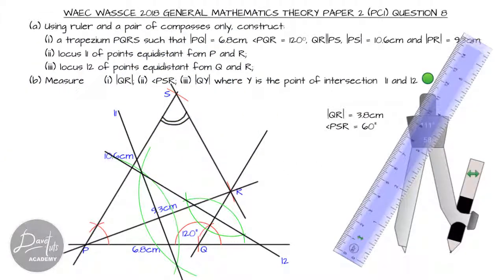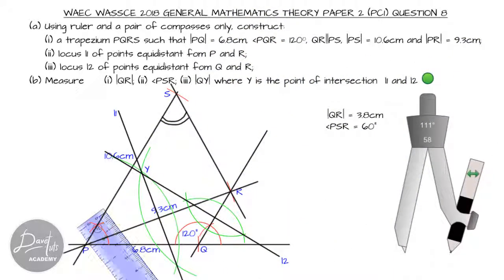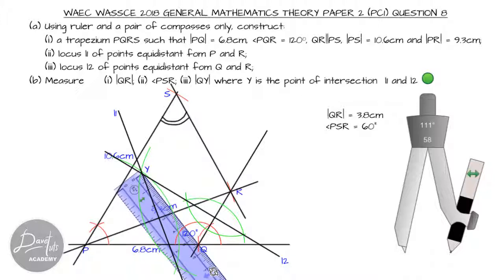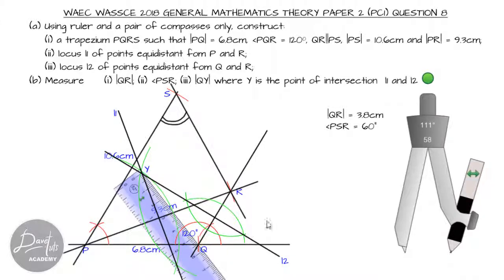Finally, we're asked to measure the line QY, where Y is the point of intersection of the two loci that we drew initially. This is point Y. We want to measure line QY. We can use our ruler. Alternatively, we could have marked it off with the compass, then taken the compass to the ruler and marked off the distance that radius is measuring. Line QY is equal to 5.6 centimeters.